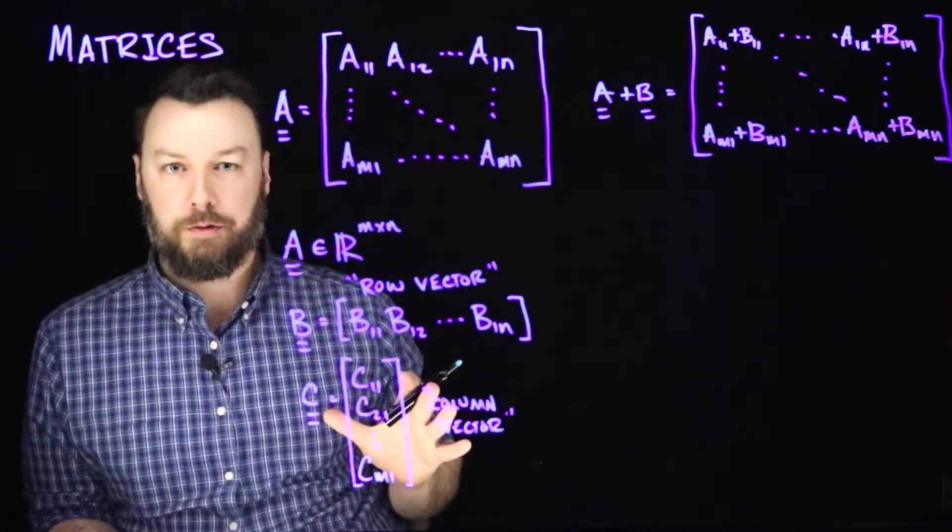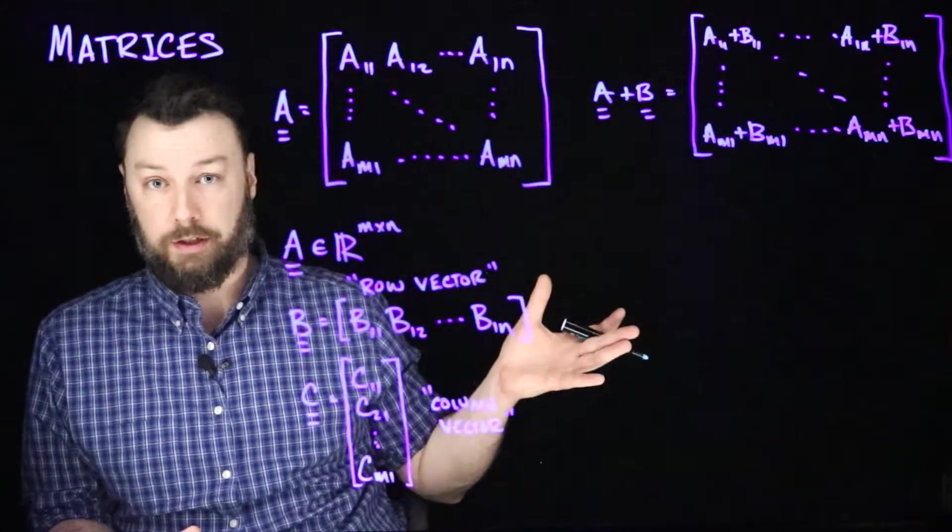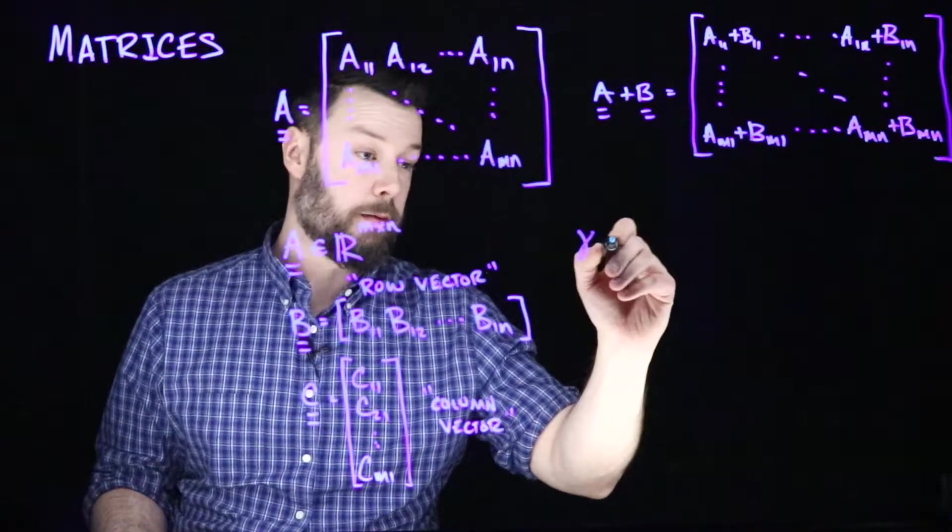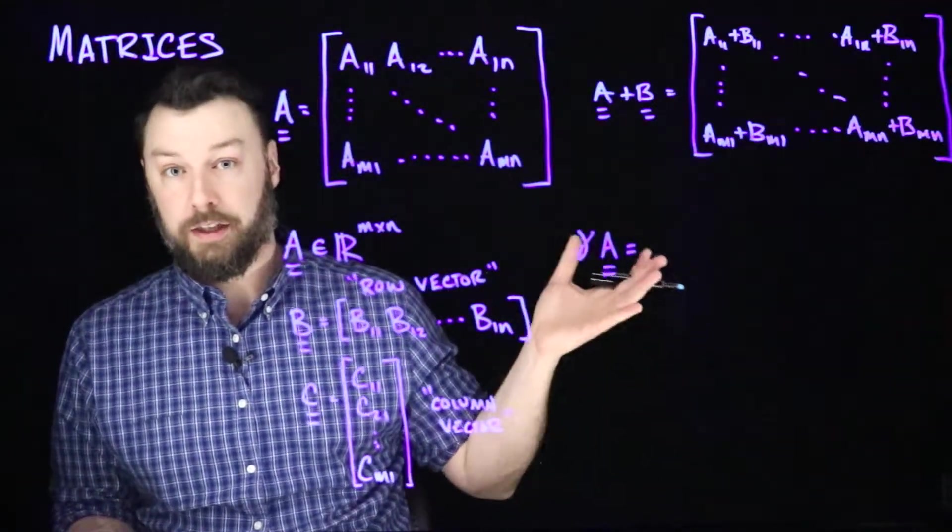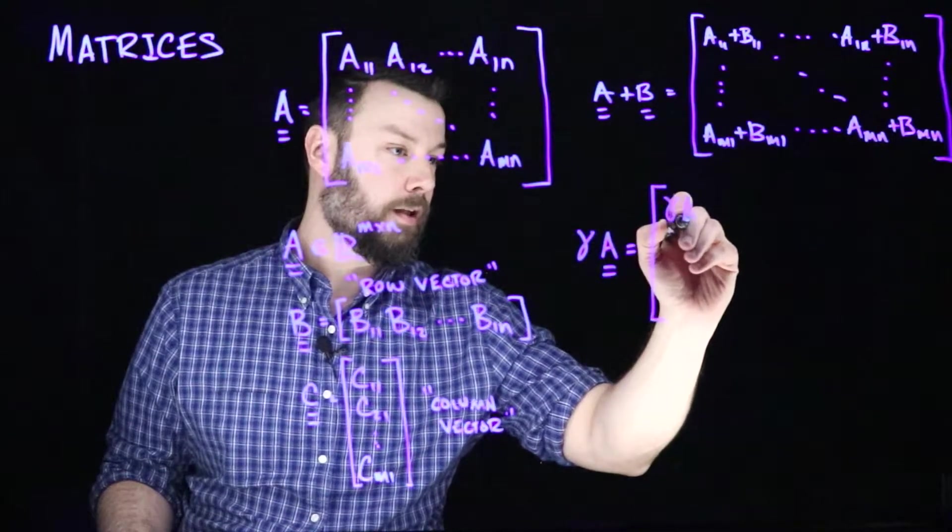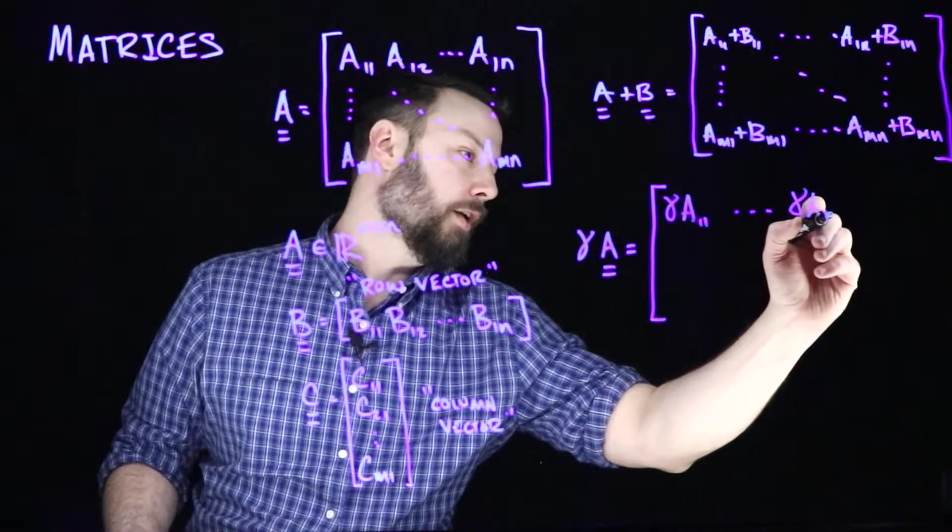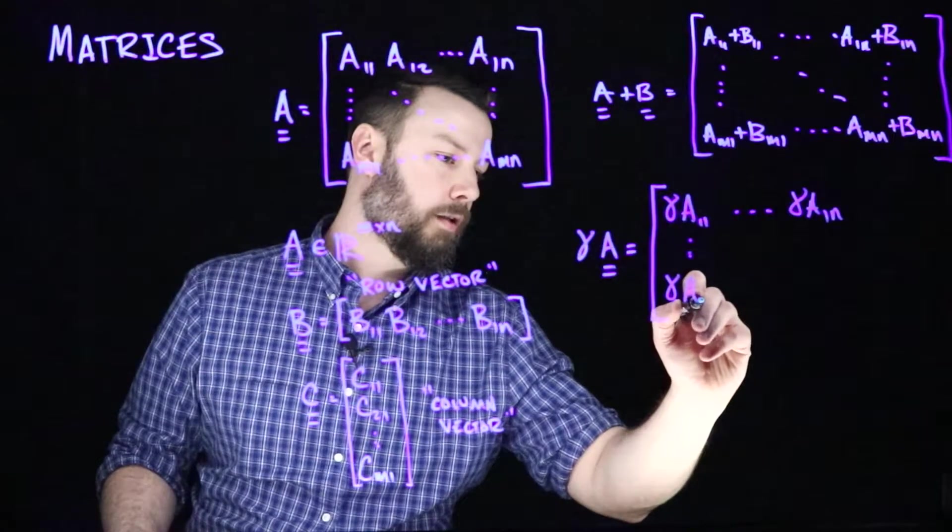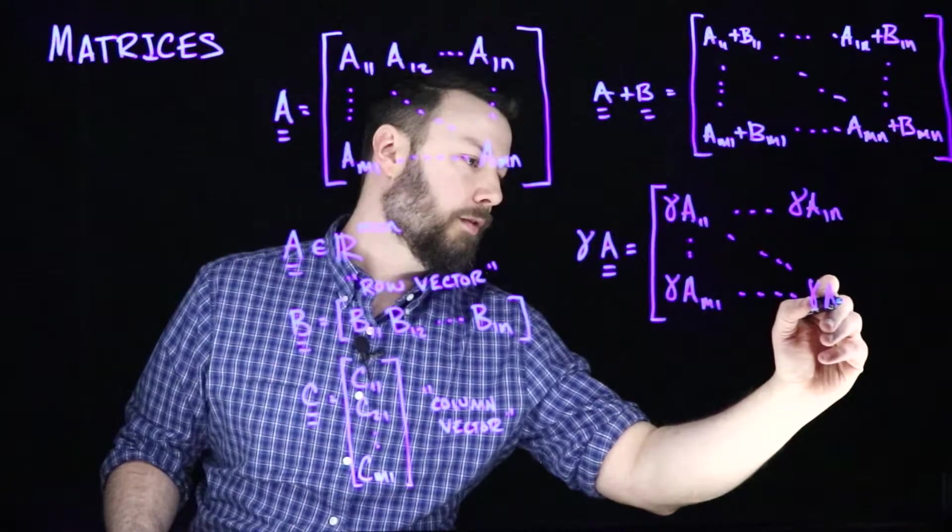The other thing we can do is multiply these things by scalars, just like we could with vectors in RN. So if we have some gamma multiplied by a matrix A, then it just multiplies each of the entries in the matrix. So we would have gamma A11, gamma A1N, gamma AM1, and gamma AMN.